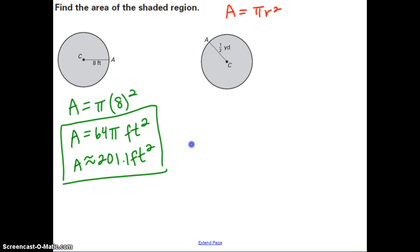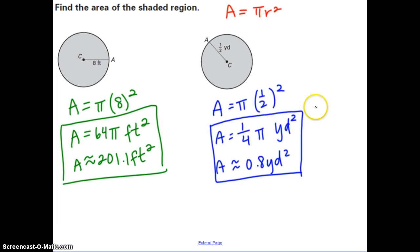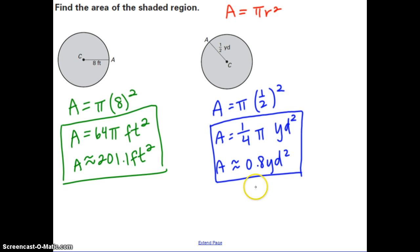Go ahead and pause and try the second one. For the second problem, you should plug in 1/2 for the radius, giving you 1/4 pi yards squared, or approximately 0.8 yards squared.